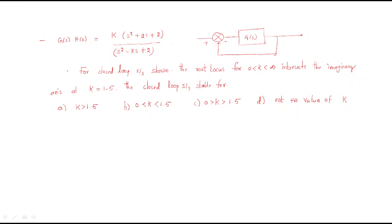Hello everyone. In this session we will discuss this problem. The given open loop transfer function is k times (s² + 2s + 2) divided by (s² - 3s + 2). This is the open loop transfer function, with system input, output, and feedback given. The problem is: for the closed loop system, sketch the root locus for 0 < k < infinity.